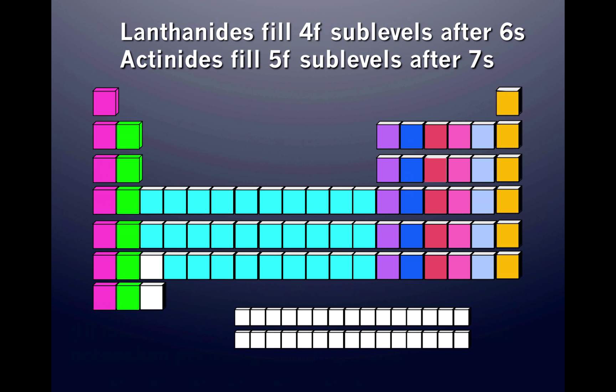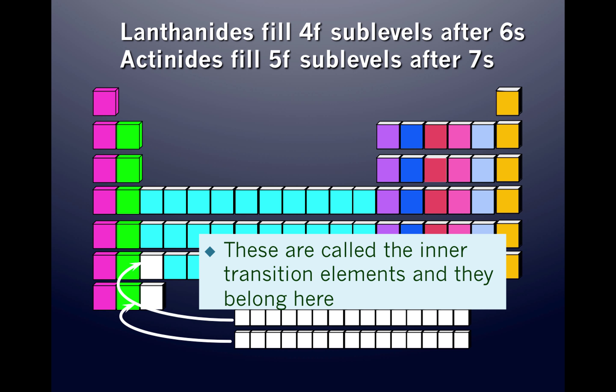Let's look at the lanthanides and the actinides — those elements separated from the main periodic table. Lanthanides fill 4F sublevels after 6s, and actinides fill 5F sublevels after 7s. Another name for these elements is the inner transition elements.